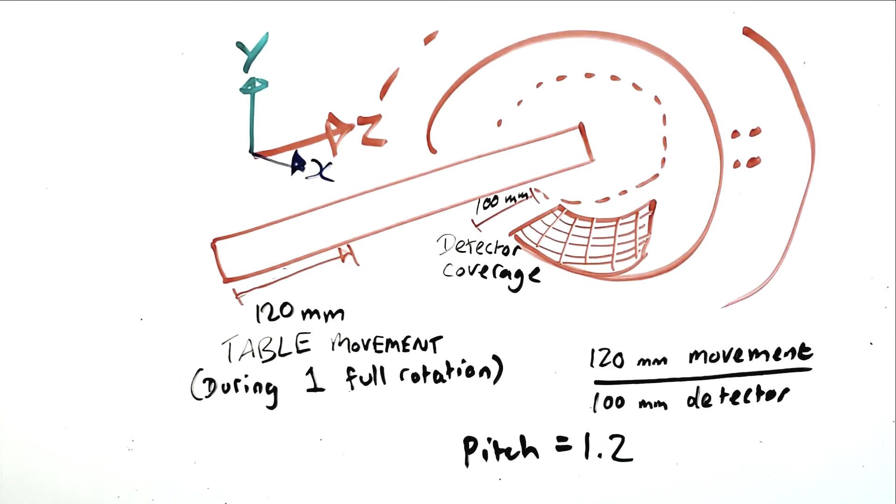So, if the pitch is higher, then functionally the table is moving faster. If the pitch is lower, then functionally the table is moving more slowly.